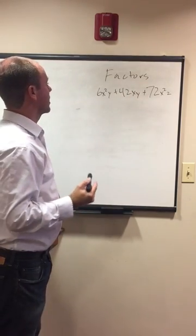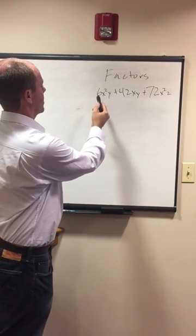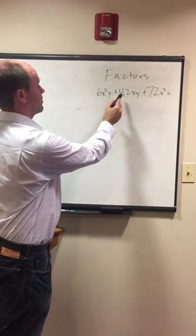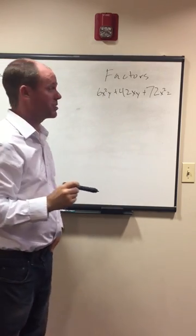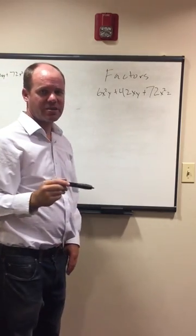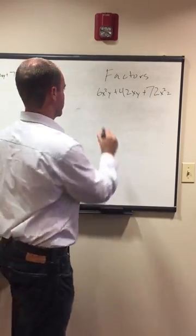And so we start off with 6 and 42, which we just did, right? And we knew that we could take 6 out of 42 because 6 times 7 is 42. As we look over here at 72, can we also take 6 out of that? The answer is yes because 6 times 12 is 72. So let's start off with 6.